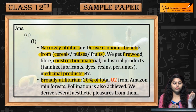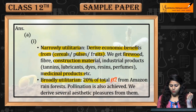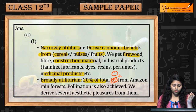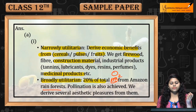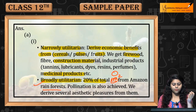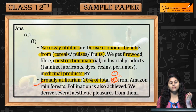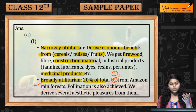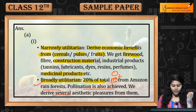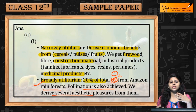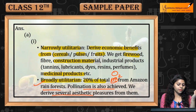Broadly Utilitarian: 20% of total oxygen comes from the Amazon rainforest — this is a broadly utilitarian benefit. Pollination is also achieved, and we derive several aesthetic pleasures from biodiversity.